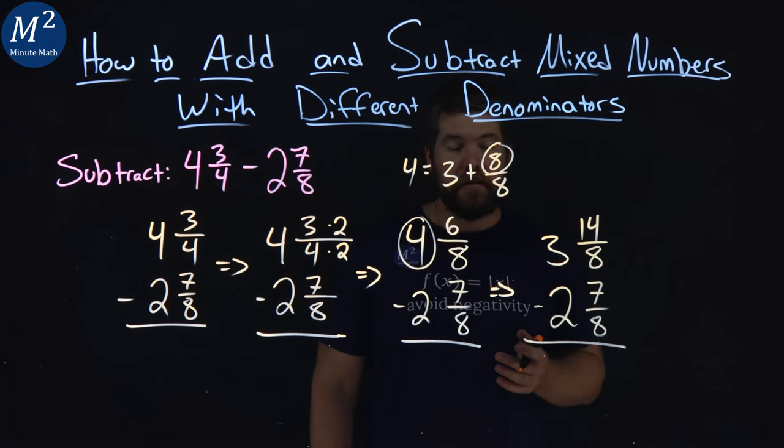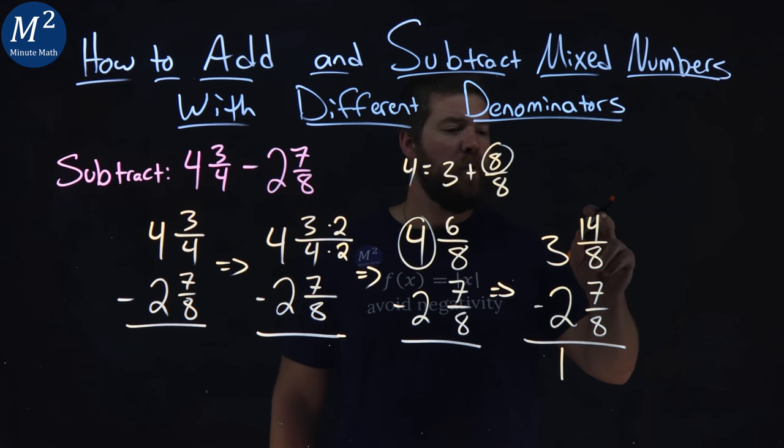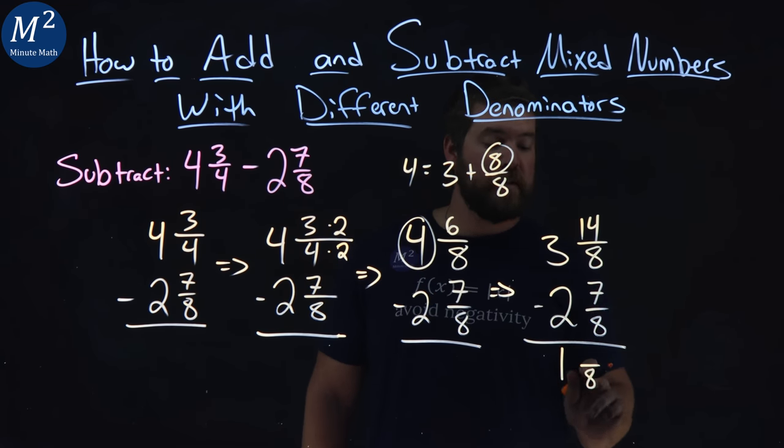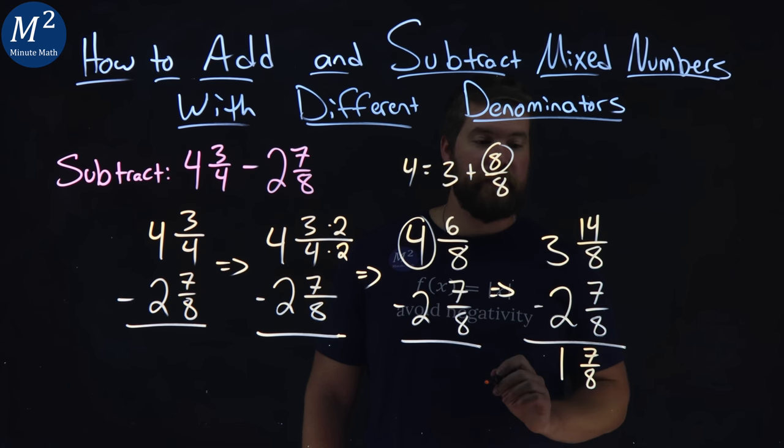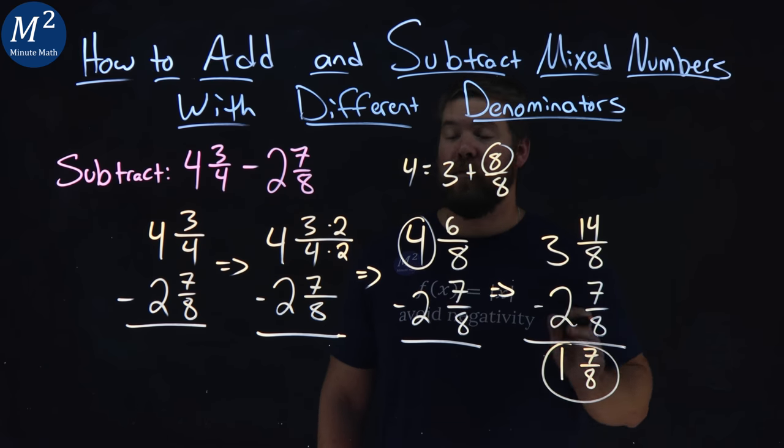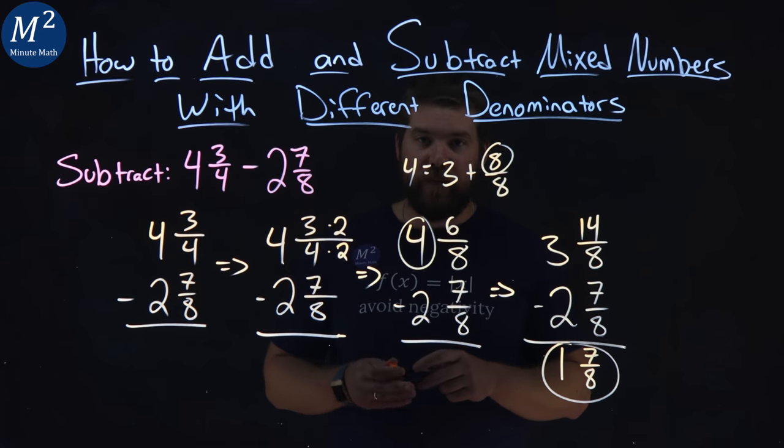Now we can subtract downwards. 3 minus 2 is 1, and then 14 minus 7, just dealing with the numerators, denominator stays the same. 14 minus 7 is 7. And that's it. We have 1 and 7 eighths as our answer when we take 4 and 3 fourths minus 2 and 7 eighths.